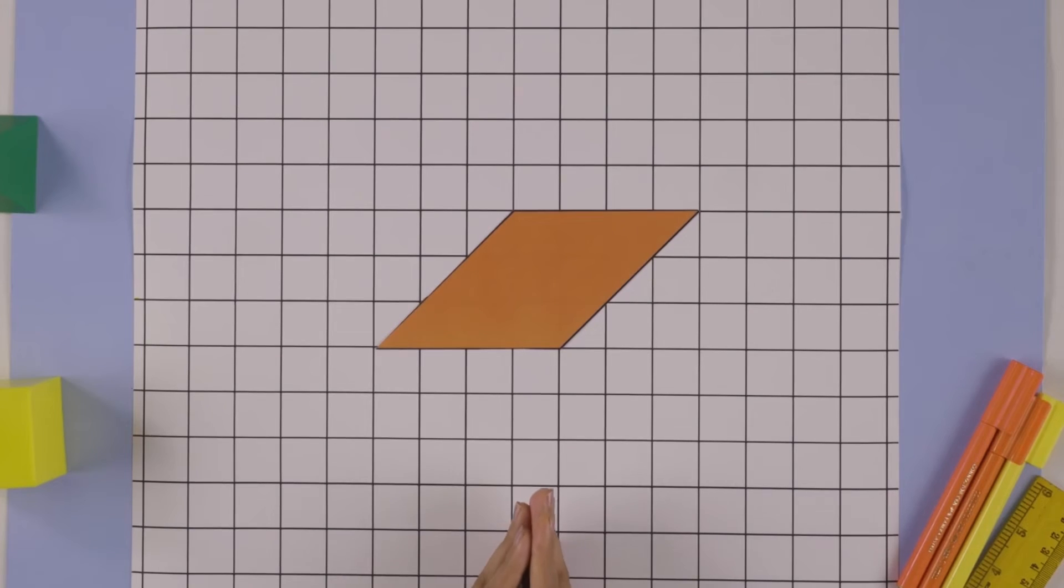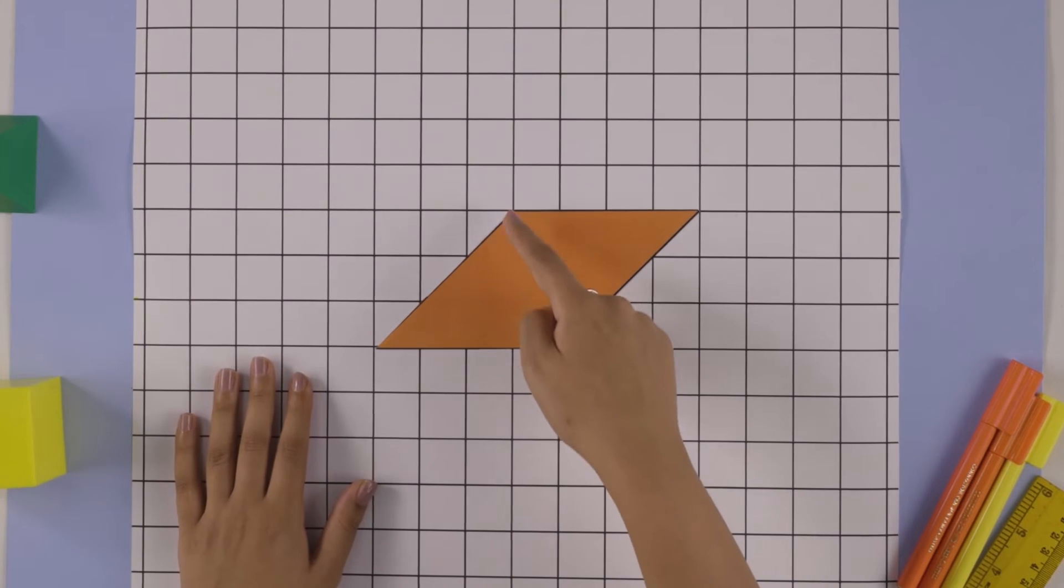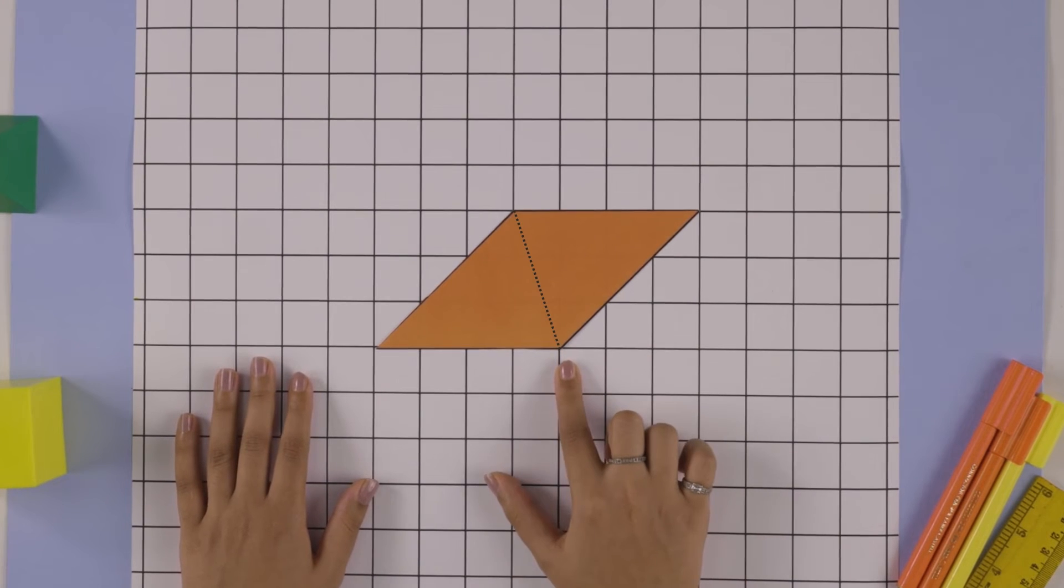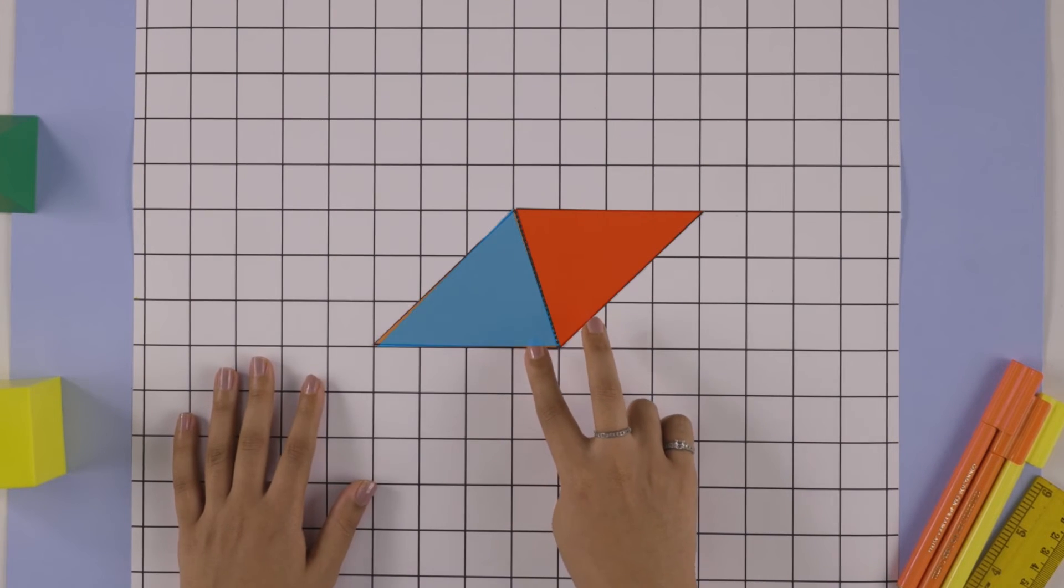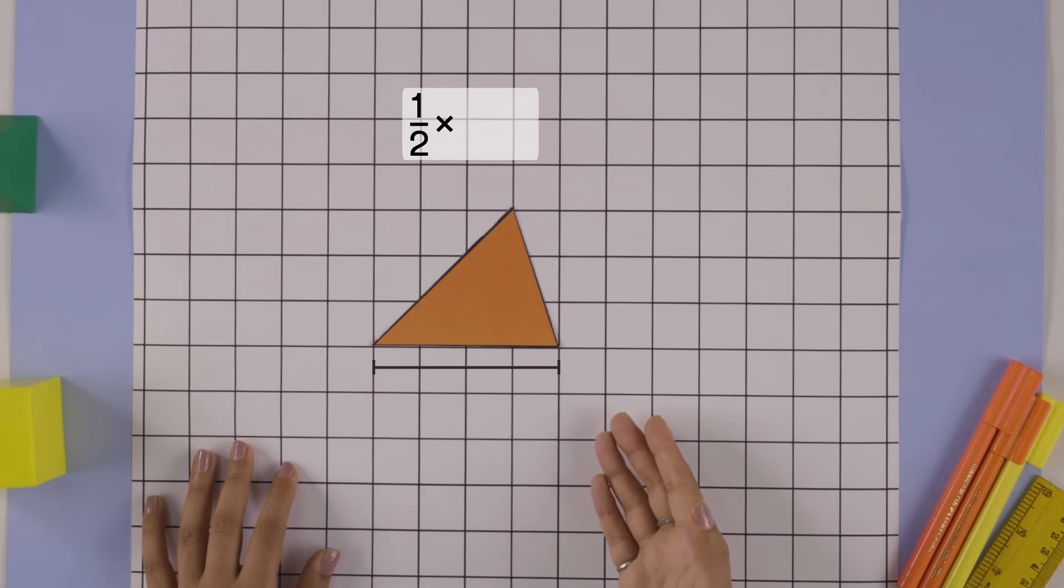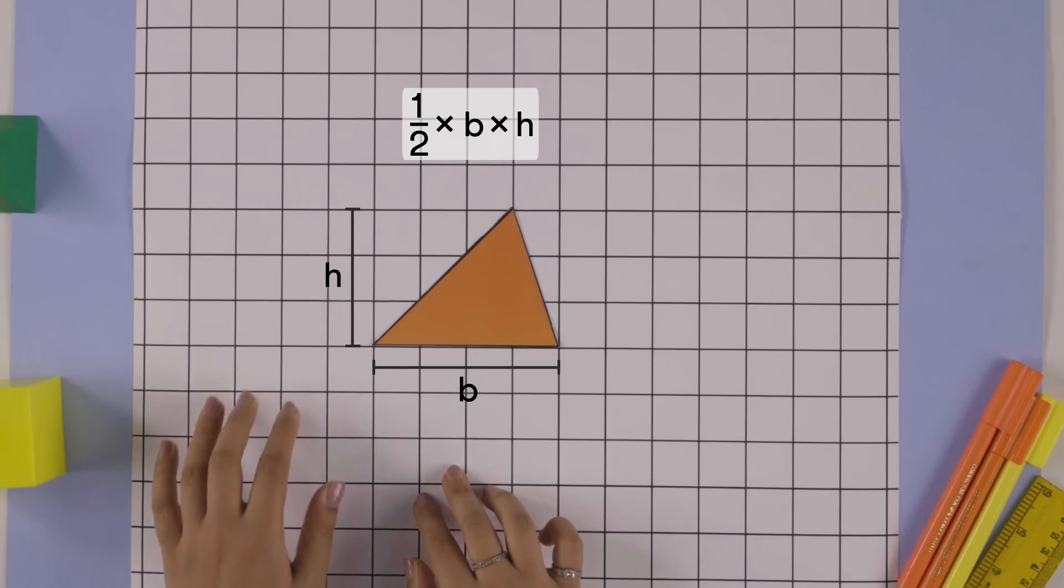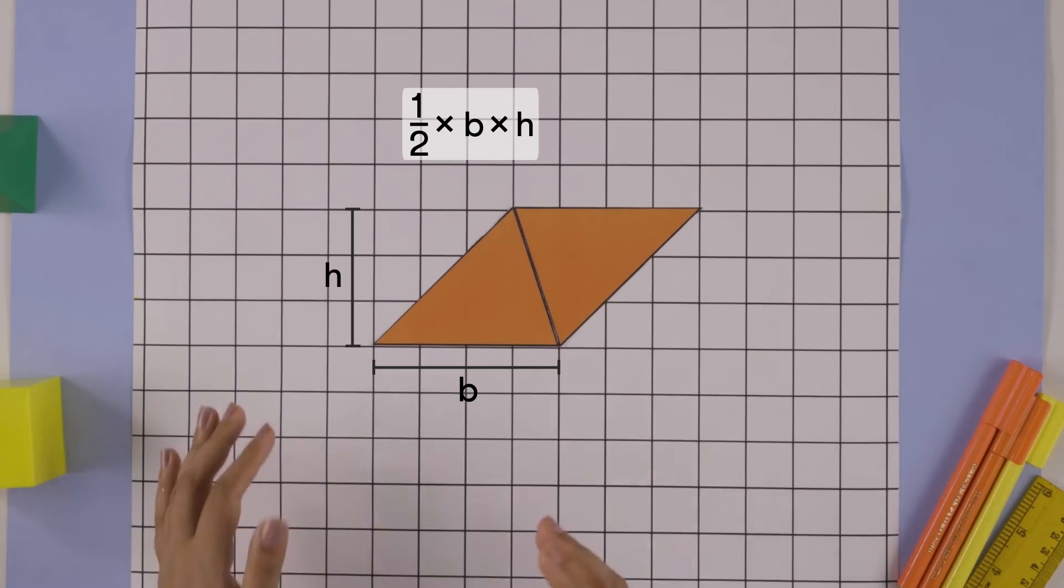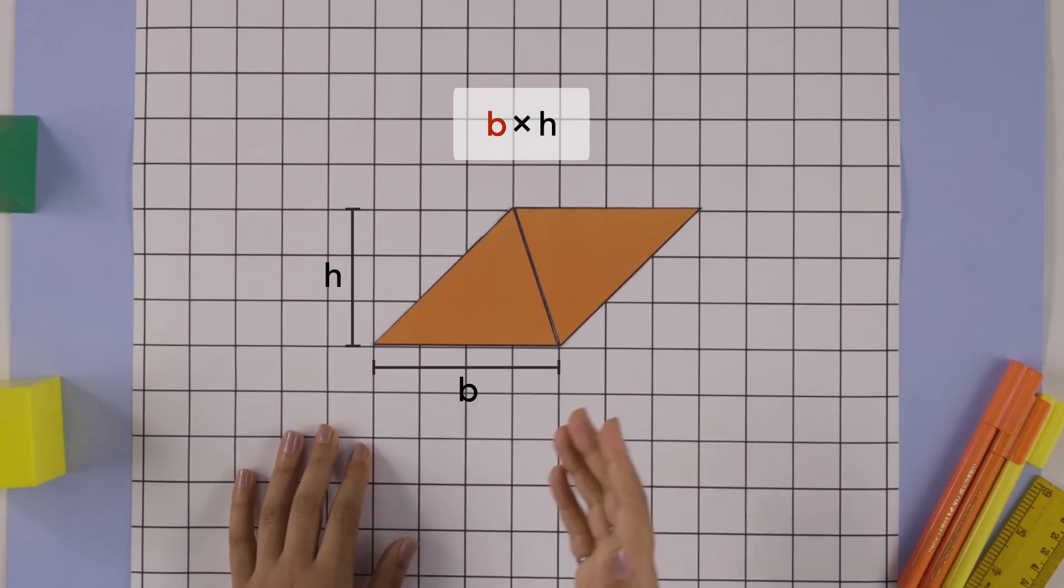There's another way to find the area of a parallelogram. Divide it into two triangles along its diagonal. These two triangles are of the same shape and size. The area of each of them must be half times base times height. Now the area of parallelogram must be double. That's base times height.